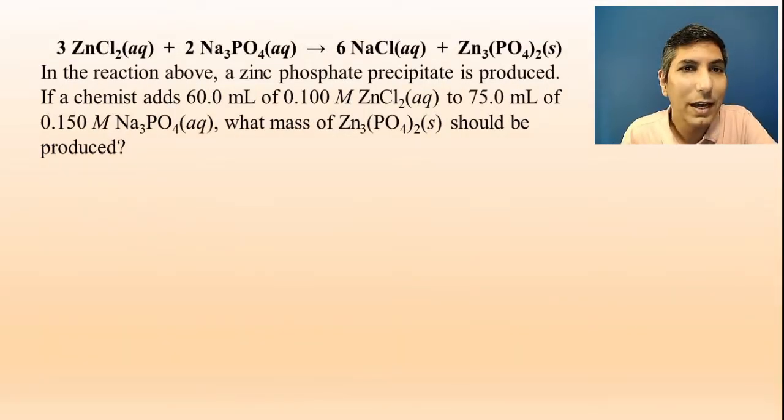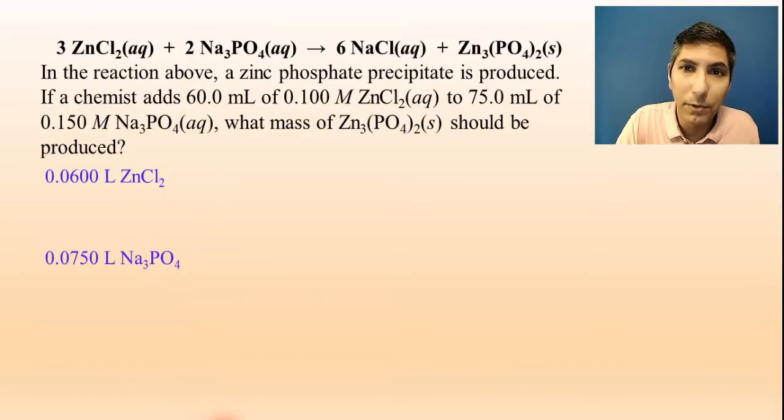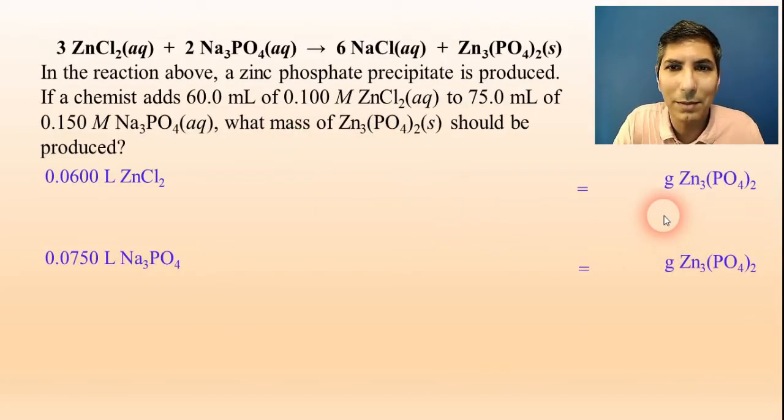Let's try another problem. In the reaction above, a zinc phosphate precipitate is produced. If a chemist adds 60.0 milliliters of 0.100 molar zinc chloride solution to 75.0 milliliters of 0.150 molar sodium phosphate solution, what mass of zinc phosphate solid should be produced? You might notice that this time, we actually have two quantities of reactants given to us. We have how much zinc chloride and how much sodium phosphate. So, this sounds like a limiting reactant problem. And yes, we can have those for solution stoichiometry problems as well. So, I have to take 0.06 liters of zinc chloride and 0.075 liters of sodium phosphate. And for both of these quantities, our goal is to convert these to grams of zinc phosphate.